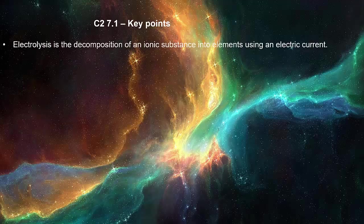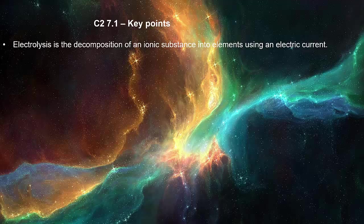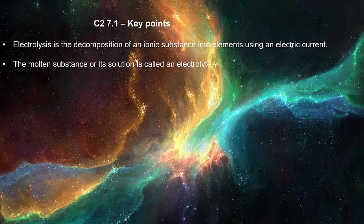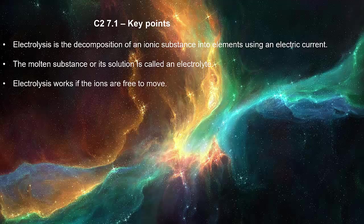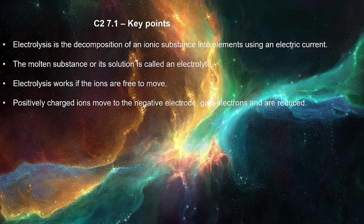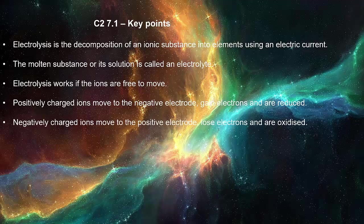Electrolysis is the decomposition of an ionic substance into elements using an electric current. The molten substance or its solution is called an electrolyte. Electrolysis works if the ions are free to move. Positively charged ions move to the negative electrode, gain electrons, and are reduced. Negatively charged ions move to the positive electrode, lose electrons, and are oxidized.